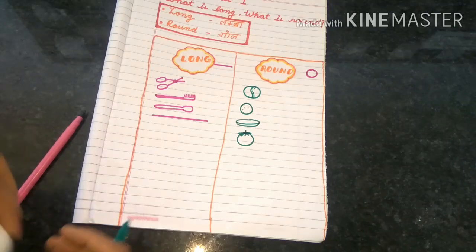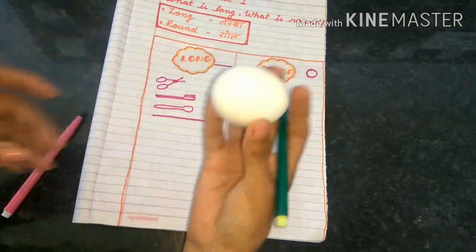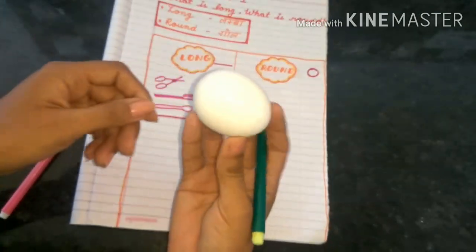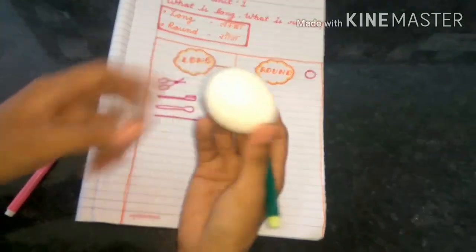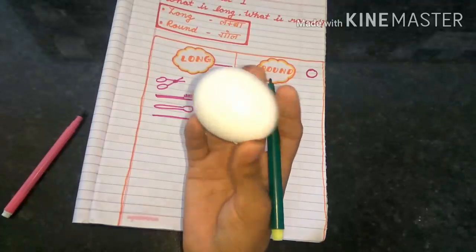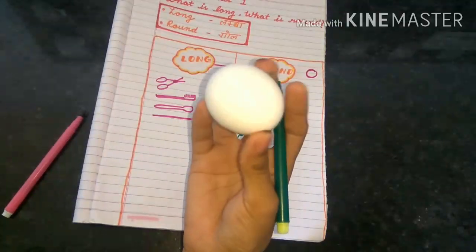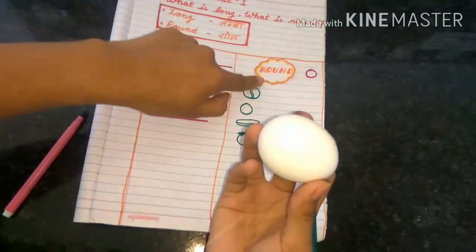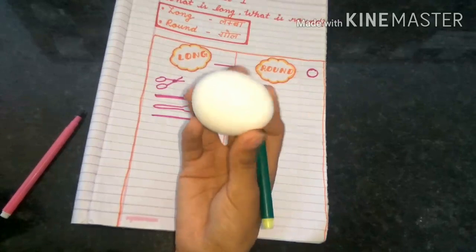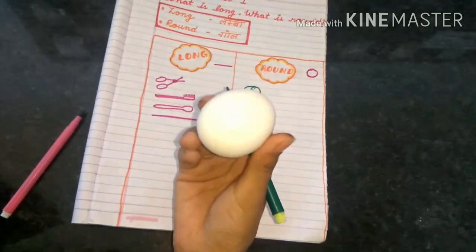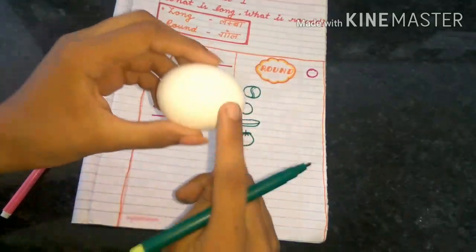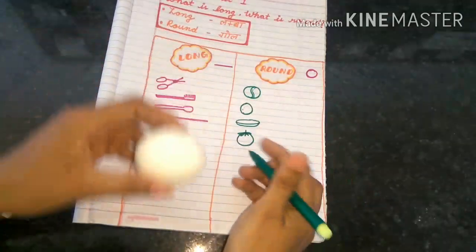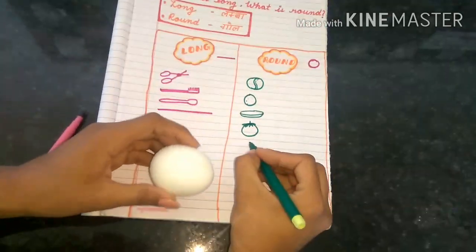Our next object is this. This is an egg. So how is it looking? Is it looking long or is it looking round? Yes, you are right — it is round.